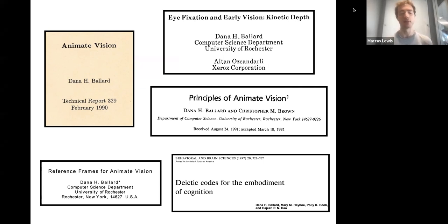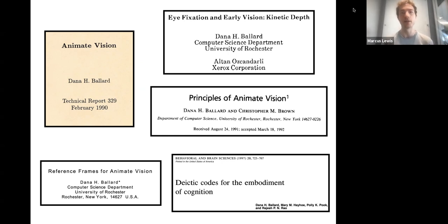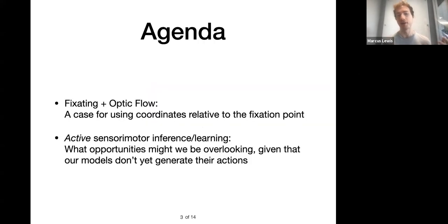Dana Ballard has been involved with tons of stuff early on. He brought forward the Hough transform to generalize it to other things, which is related to reference frames. And then in the late 80s through the 90s and beyond, he has done a lot of work on principles of vision systems where the eyes are moving, where you're fixating on different things, and embodied vision in general, which heavily overlaps with what we're focused on. There are a couple of things worth bringing forward here.